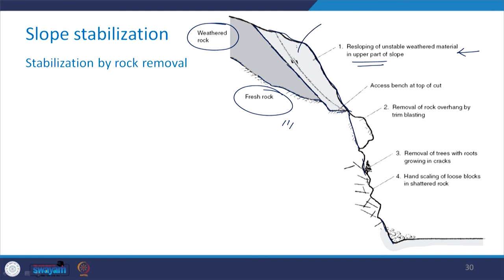After resloping, there would be an excess bench at the top of the cut. The second step includes the removal of rock overhang by trim blasting — using trim blasting this overhang would be removed. If there are trees present with roots growing in cracks, such trees should be removed, because ultimately they would tend to widen those cracks.